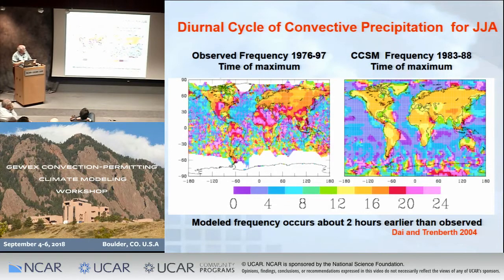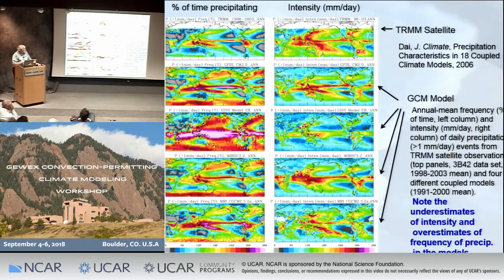Igo Dye and Kevin Trenberth did studies in 2004 showing that global climate models at that time did not reproduce this midnight maximum. Yellow means basically a noon maximum, and here you can see the midnight maximum. Igo continued that work in 2006. The top panels are from the TRMM satellite and the lower panels from various GCMs.